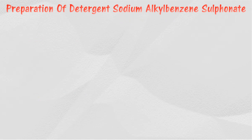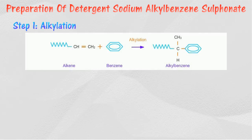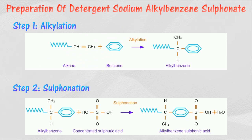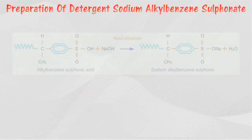The manufacturing of sodium alkyl benzene sulfonate can be divided into three steps. In alkylation, an alkene carbon chain from petroleum reacts with benzene to form alkyl benzene. In sulfonation, alkyl benzene reacts with concentrated sulfuric acid to form water and alkyl benzene sulfonic acid.